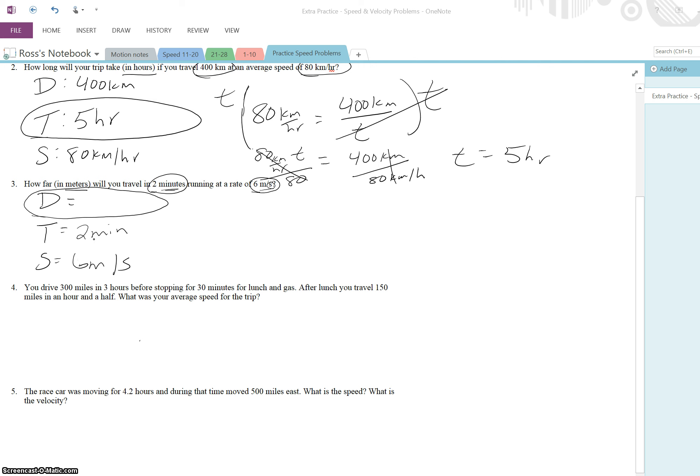So the easiest thing to do here is to switch two minutes into seconds. So we multiply it by 60 seconds, because that's the number of seconds that are in a minute, and we end up with 120 seconds. So now we can solve. We've got six meters per second equals distance over 120 seconds. Multiply both sides by 120. That will cancel out. D is equal to six meters per second times 120 seconds, which gives us a distance of 720 meters.